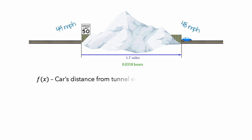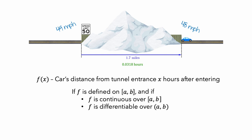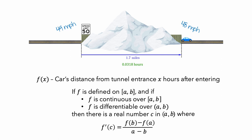If we let f be the car's distance from the tunnel entrance x hours after it enters the tunnel, then we can think about this scenario in terms of the mean value theorem. The mean value theorem says if a function f is defined on the closed interval from a to b, and if f is continuous over the entire interval and f is differentiable over the interval, then there is a real number c in the interval where f'(c) is equal to the difference quotient evaluated from a to b.